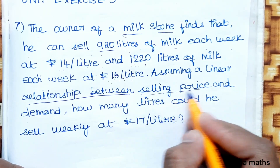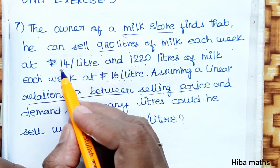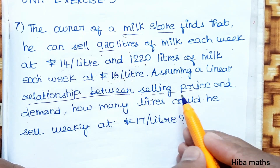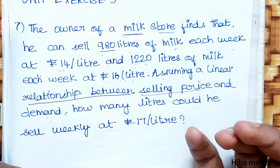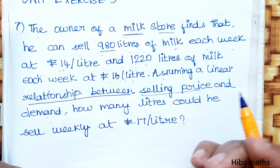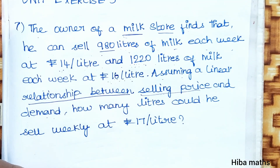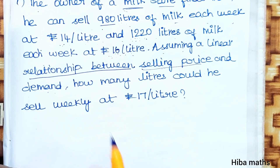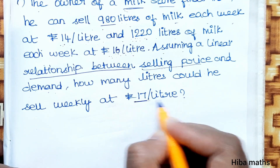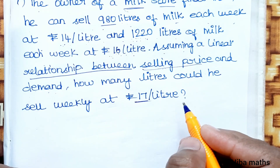The question asks: at a selling price of Rs.17 per litre, how many litres could he sell weekly?